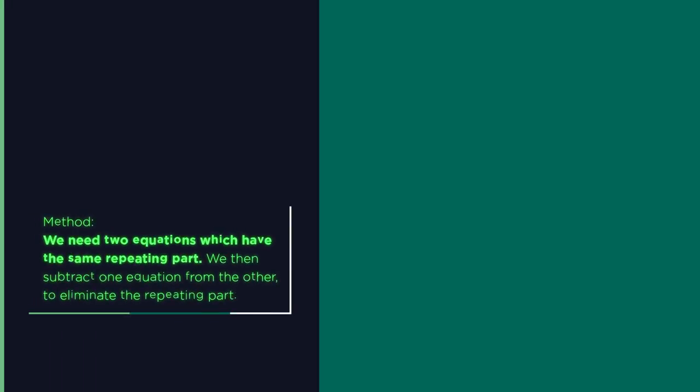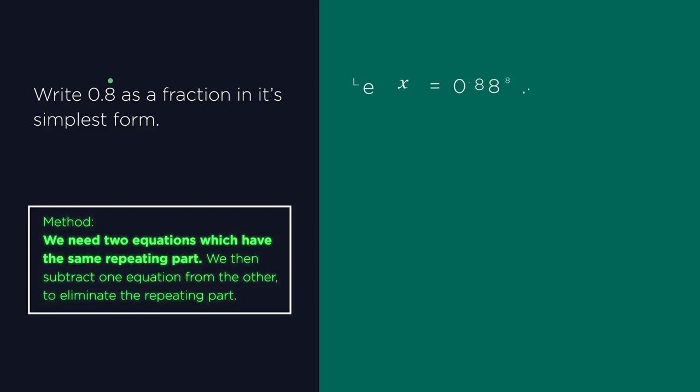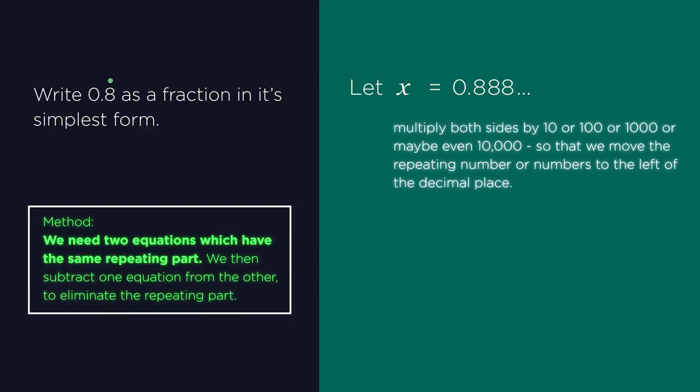We need to start by forming the two equations. Let x equal 0.8888 and so on. We now multiply both sides by ten, or one hundred, or one thousand, or maybe even ten thousand, so that we move the repeating number or numbers, so the eight, to the left of the decimal place. You will see that this is really important in later examples.